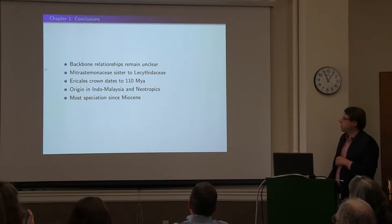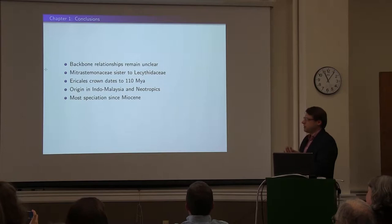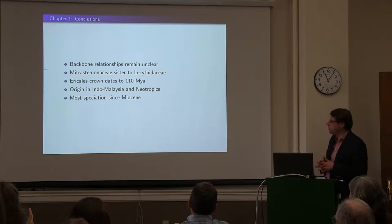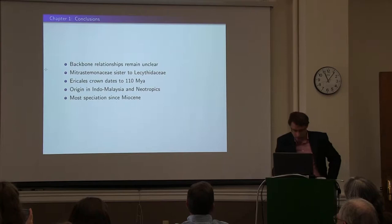In summary for the first chapter: the backbone relationships in the Ericales, even though we've made some progress, still remain unclear. The parasitic plant Mitrastemonaceae is sister to the Brazil nut family. Ericales is an old group — about 110 million years — with an origin in Indo-Malaysia, and most of the increases in speciation rate have been recent.